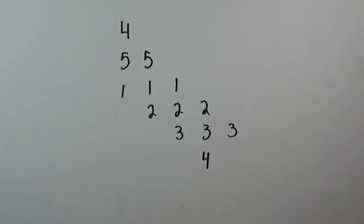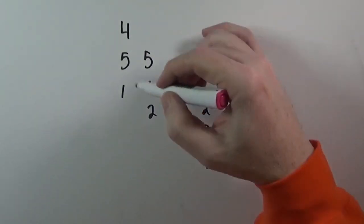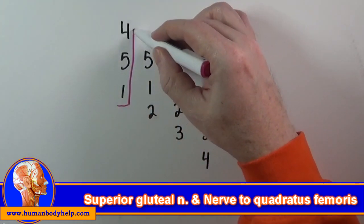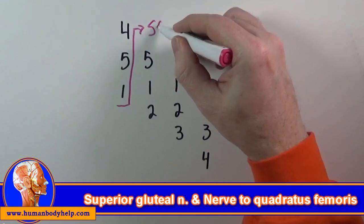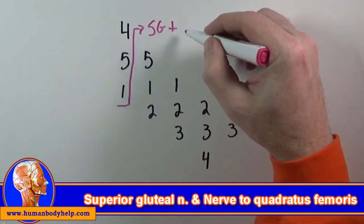Now these numbers are already organized into groups if we draw them like this. The first group, L4, L5, and S1, are the levels that contribute to both the superior gluteal nerve and the nerve to quadratus femoris.